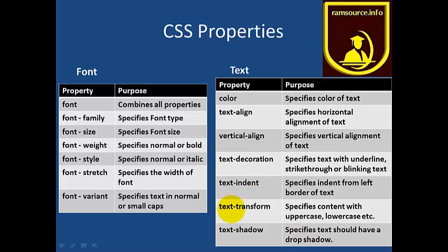You can do proper indentation. You can transform text to uppercase or lowercase. Next, text-shadow. In the text, you can add a drop shadow — you can see this on websites, or in word art. If you want to add a background, you can add a shadow in the foreground. That can also be designed with CSS.